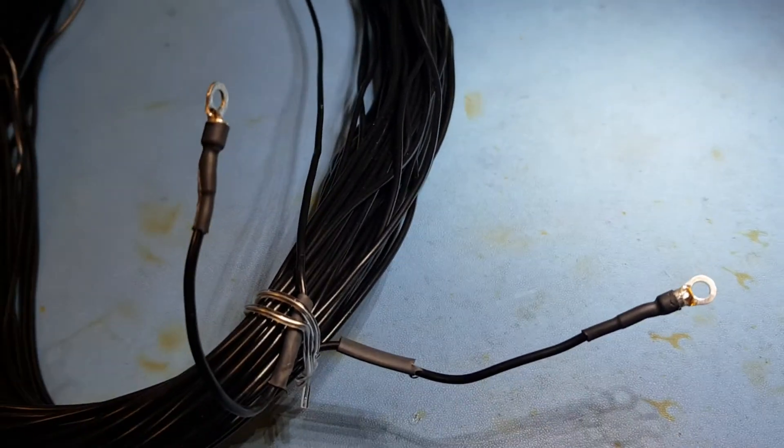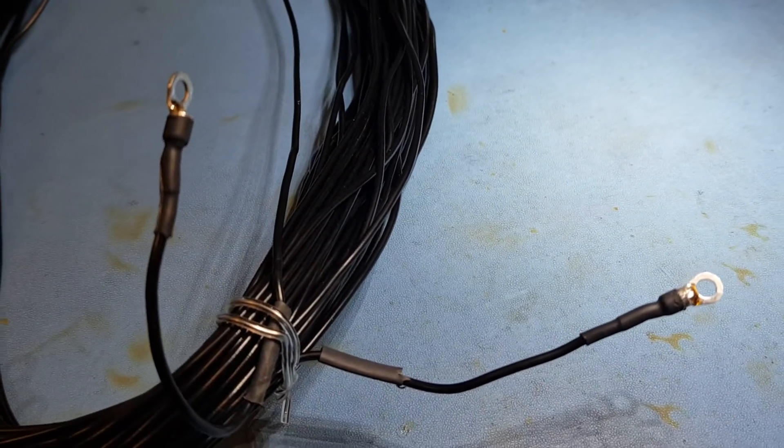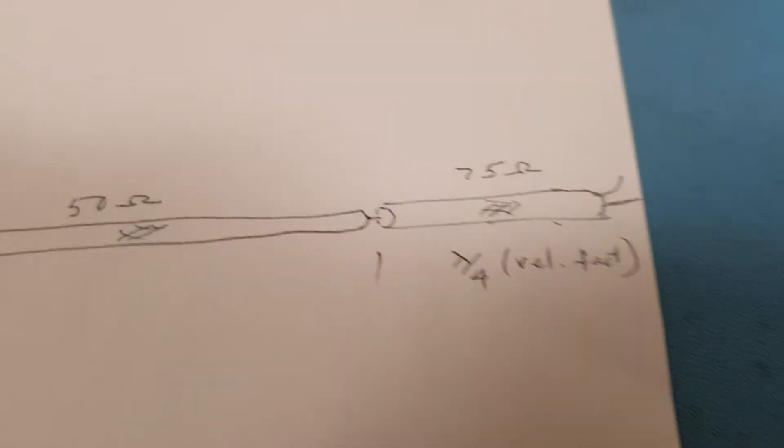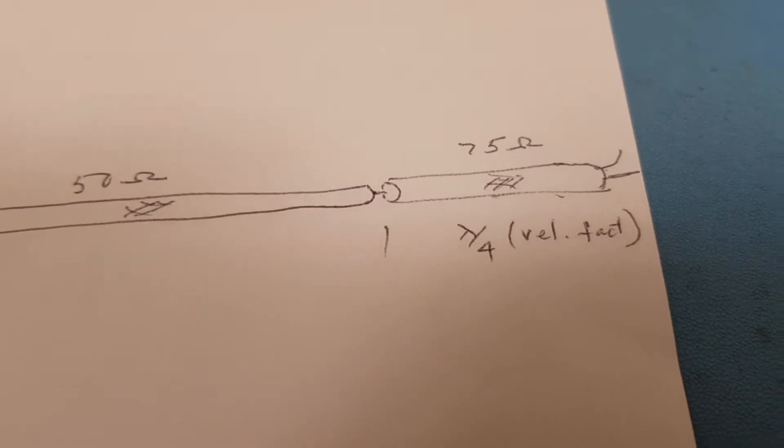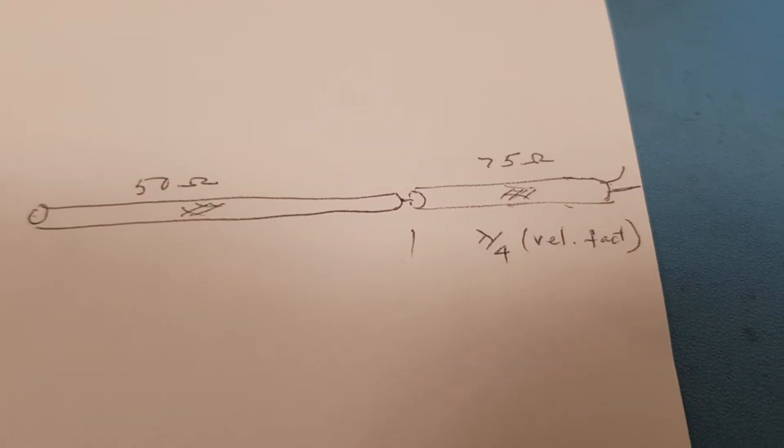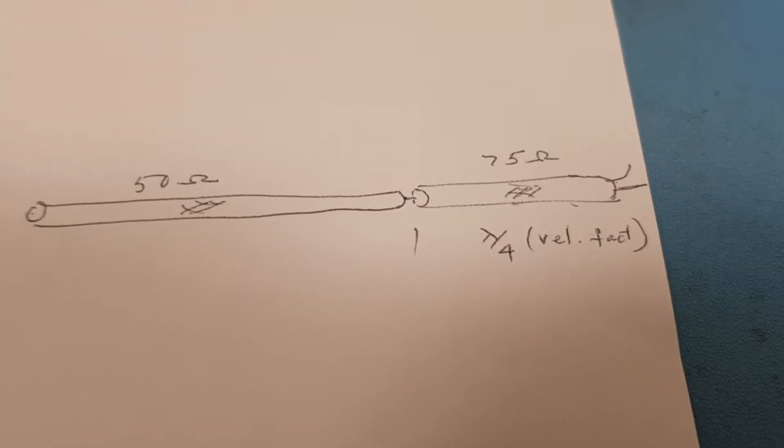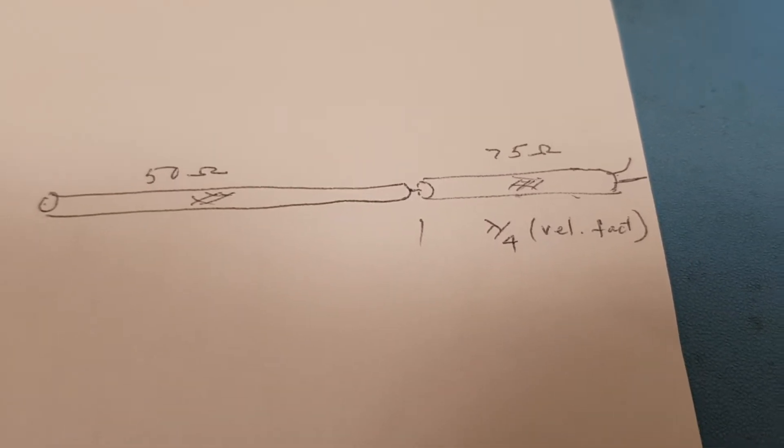Now there are two ways to fit this full-wave loop. One is using a quarter-wave stub of 75 ohm coax, but this will operate on a single band only, or mono band.